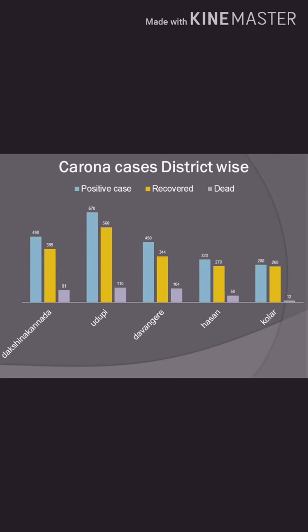Before getting into the topic, let me take the example of the present situation of coronavirus to show how the government analyzes the situation. First, they collect information from hospitals regarding patients' age, gender, place, symptoms, and other general information. For better understanding, they present it in a systematic manner through classification. They can also show it through graphs — for example, a graph showing weekly coronavirus case data district-wise, indicating positive cases, recovered, and dead cases in five districts.